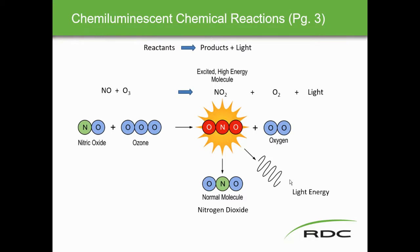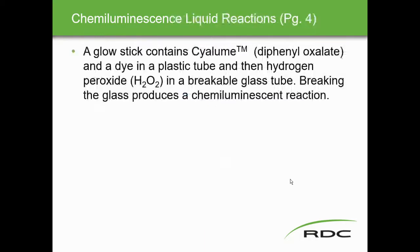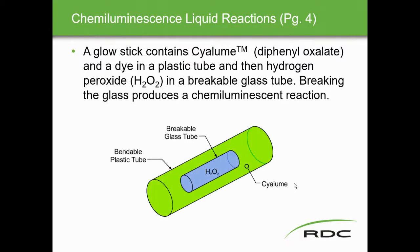A familiar example is a glow stick: it contains diphenyloxalate, a dye, a plastic tube, and hydrogen peroxide in a breakable glass vial. Breaking the glass produces a chemiluminescent reaction. The hydrogen peroxide breaks down and produces that glowing emitted light — that is chemiluminescence, and that's what our analyzer is going to measure.